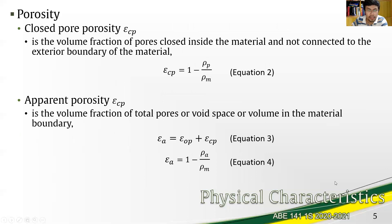Closed pore porosity is the volume fraction of pores closed inside the material and not connected to the exterior boundary. In equation two, it is one minus the quantity of particle density over material density. Apparent porosity is the volume fraction of total pores or void space within the material boundary — it is the sum of open pore and closed pore porosities, simplified as one minus the quantity of apparent density over material density.